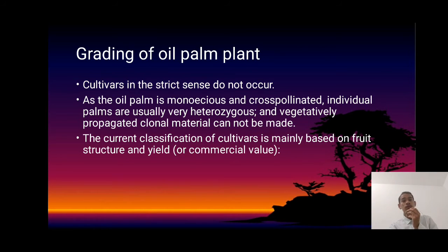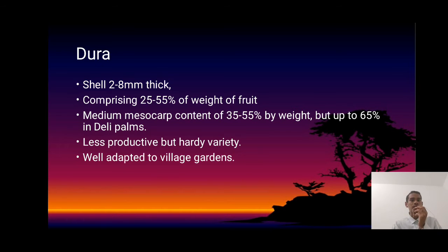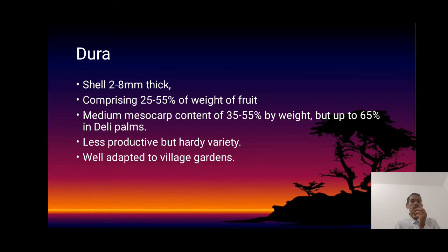The simple approach to produce oil palm is by seed or cross-pollination. This is the type of classification for the oil palm. The first type is Dura. Seed shell from the plant is 2 to 8mm thick. The shell comprises 25% to 55% of the weight of the fruit. The mesocarp contains 35% to 55% oil by weight, but up to 65% in some varieties. Less productivity but a hardy variety, well-adapted to village gardens.